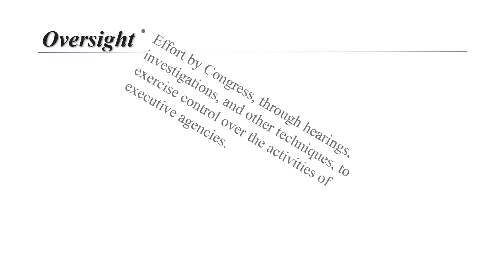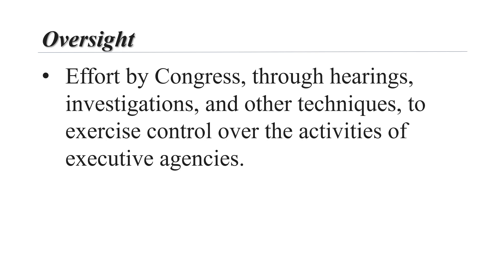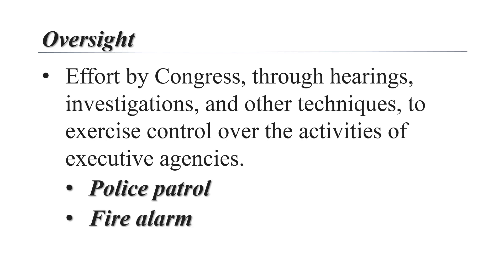Congress has a number of tools for overseeing the federal bureaucracy, including individual members who are free to ask agencies for detailed information on just about any issue. Congress often conducts its most effective oversight during the authorization and appropriations process when new programs are created and spending is reviewed. Together, Congress and the president conduct two basic types of oversight. The first is police patrol oversight, where the two branches watch the bureaucracy through routine reviews. Congressional spending committees and the president's budget office conduct most of this oversight during the annual budget process.